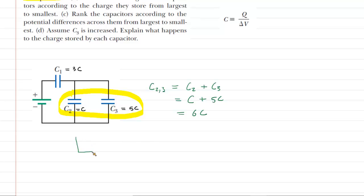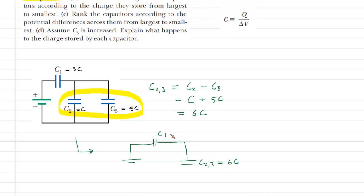After you combine them algebraically, what you want to do is combine them into a new drawing. Here's the battery, here's C1 which has just been watching our work, and now that we've combined C2 and C3, we make a new one — C2,3 — with capacitance equal to 6C. C1 is still 3C. You always want to make a new drawing after combining any two or more capacitors.